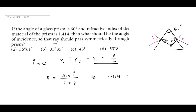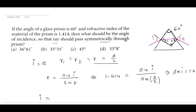From the refractive index formula: 1.414 equals sin i divided by sin r. Since A is 60 degrees, r equals 30 degrees, so sin i equals 1.414 times sin 30, which is 1.414 times one-half. Therefore, i equals sin inverse of 1.414 over 2, which is sin inverse of root 2 over 2, giving the angle of incidence as 45 degrees.